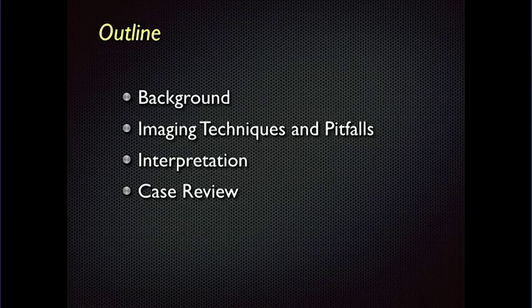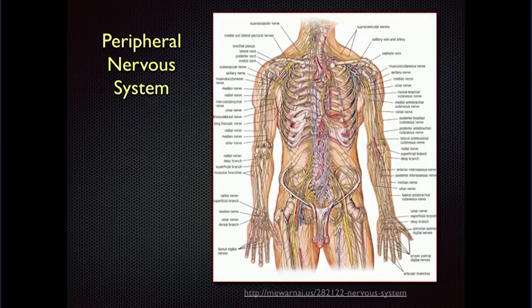Hopefully this will be helpful for everyone. We'll go through some of the background, talk about imaging techniques, and then mainly focus on looking at some cases and interpretation. We often in radiology don't really think about the peripheral nervous system that much, except when we look at the spine or nerve involvement of tumors. But there are a lot of nerves out there.